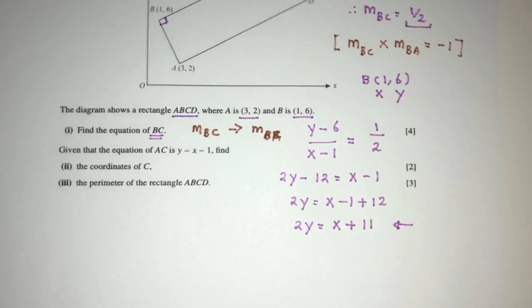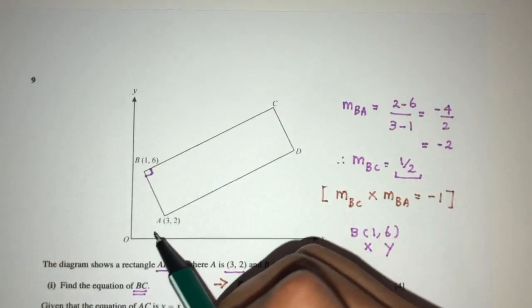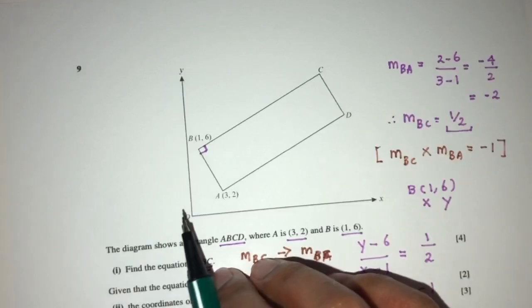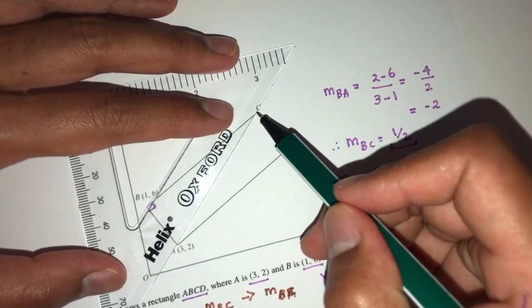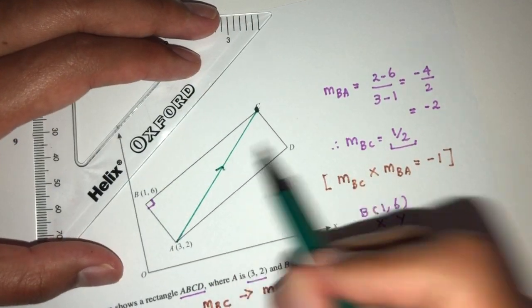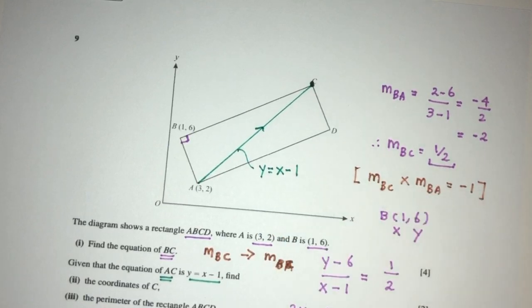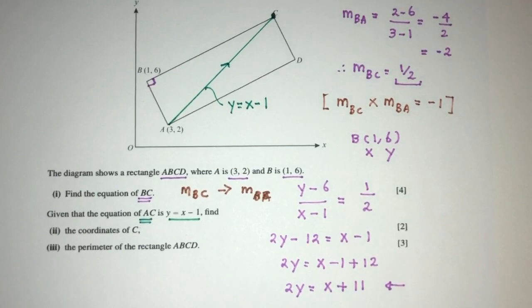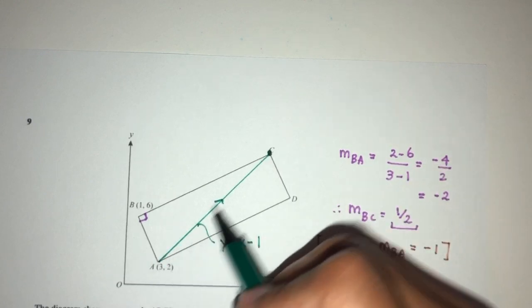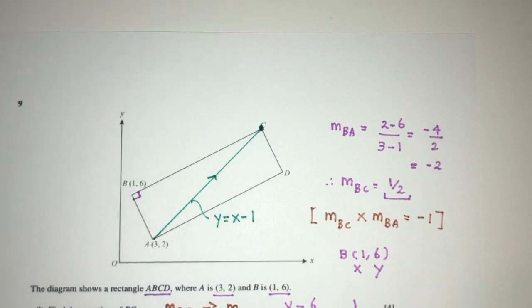Now for part 2, given that the equation of AC is this, AC will be this line. So if you join A to C, write A to C, this will be given to you by this equation, which is Y equal to X minus 1. Now the question is, we have to find the point C. Pretty easy. As you can see, point C is the point of intersection between this line and this line. Intersecting means we have to solve a simultaneous equation.